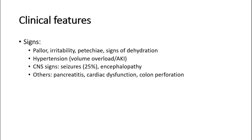Hypertension may be seen in a child with volume overload or acute kidney injury. We should also look out for central nervous system signs such as seizures or encephalopathy — in 25% of cases the child might have seizures, which are often associated with hemolytic uremic syndrome. Other organs affected may show signs of pancreatitis, cardiac dysfunction, or perforation of the colon.